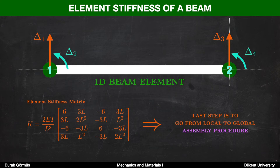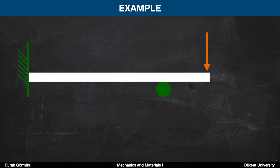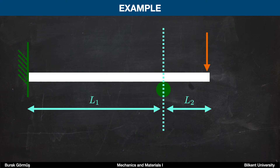In order to solve problems with the finite element method, we need to assemble our geometry — we need to go from local to global coordinates. Let's look at an example. In this example there is a fixed end, a roller, and a transverse loading at the end. We can express this beam as two finite beam elements: one for length one and one for length two.